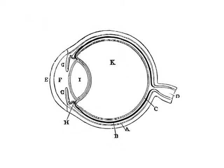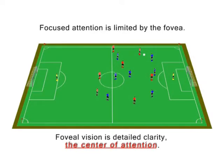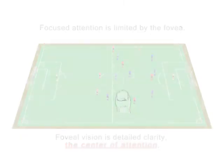The common sense view on focused attention is that it's whatever we see. The reality is, it's nowhere near what we see. Focused attention is around two degrees of the visual field, or about the size of your thumbnail at arm's length.